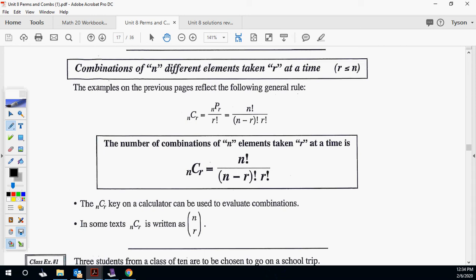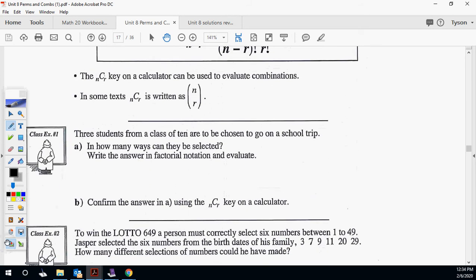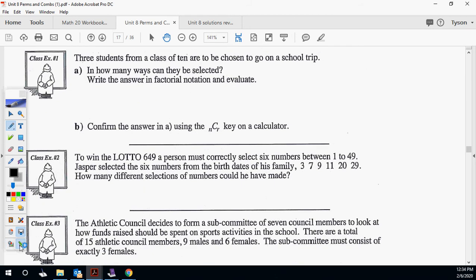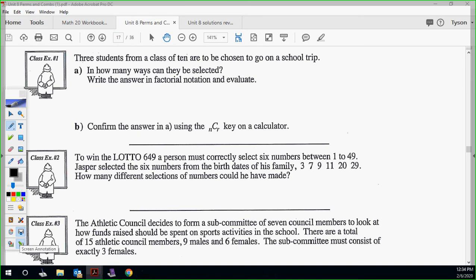I hope that you guys see that this is what makes it smaller total. You divide out the orders. Let's take a look here. Three students from a class of 10 are being chosen to go on a school trip. How many ways can they be selected? Write the answer in factorial notation and evaluate. We know it's going to be 10 choose 3. If I write factorial notation, that means we're doing 10 factorial over 7 factorial, 3 factorial. Where does that come from? Well, this is N. And then it's N minus R. And then it's R. 10 minus 3 is 7. And then it's 3 factorial. Either way, when you do this, it's 120.